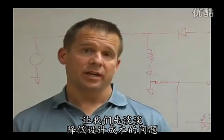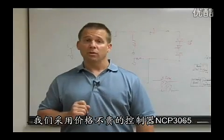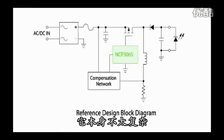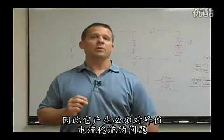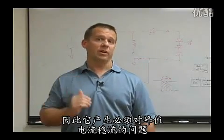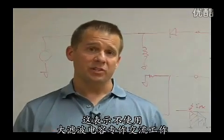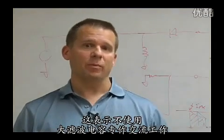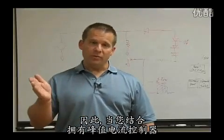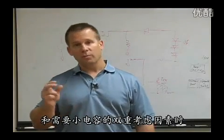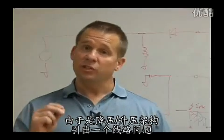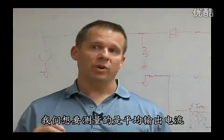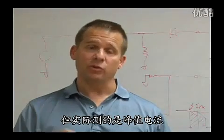To address the lower cost aspects of the design, we start with an inexpensive controller — the NCP3065. This is a less sophisticated controller by nature; it doesn't have an integrating loop inside, which creates the problem of having to regulate peak current. We also need it to be small, meaning no big filter capacitors, specifically for AC operation. Coupling the fact that we have a peak current mode controller with the need for small capacitors, it's clear we're going to be regulating the peak of the secondary side. In a buck-boost we want to measure the average output current, but we're really measuring the peak current.